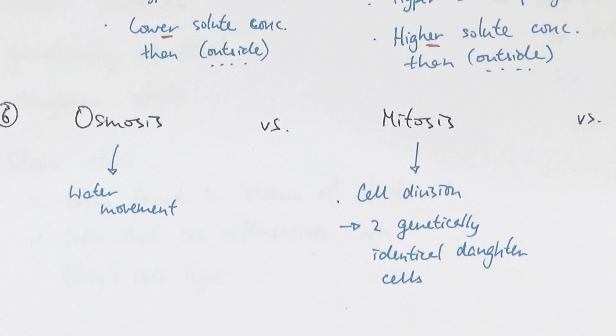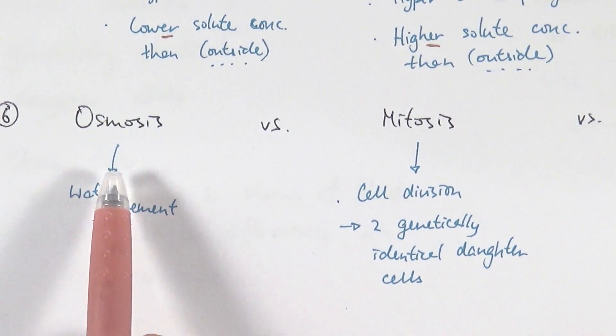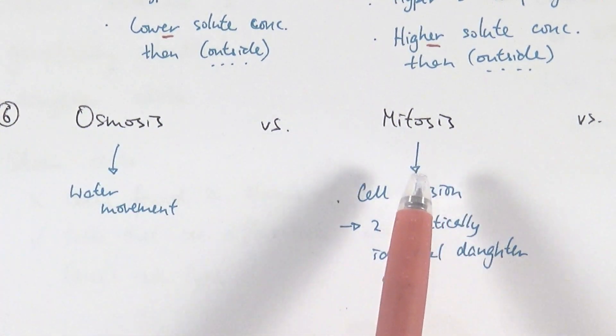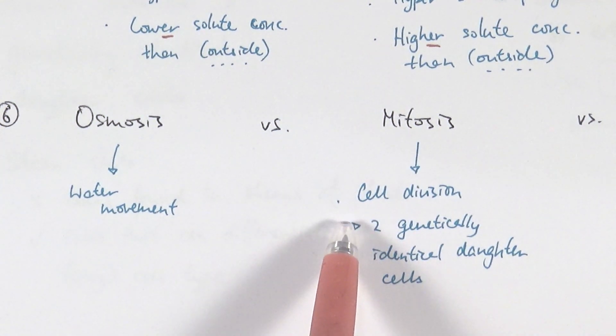Please, please, please don't do that. Osmosis is the mechanism for water movement down the water concentration gradient. So it's about water movement. Mitosis is completely and utterly unrelated thing. It's a cell division which makes two genetically identical daughter cells.